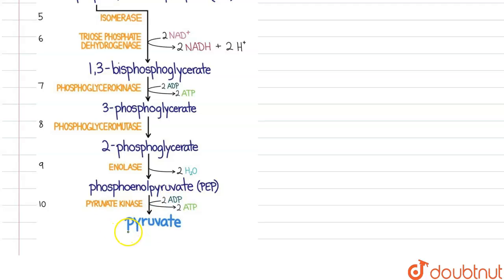So how much energy are we forming? Here two, here two, and two here—four ATPs are formed. We have two NADH molecules formed.